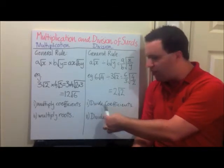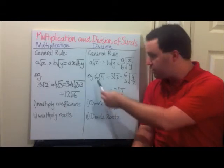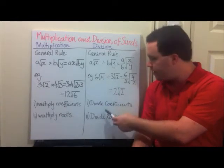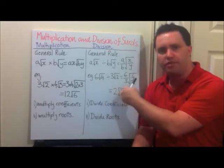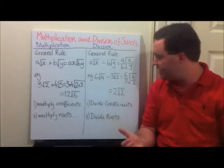The rules: divide our coefficients, so the numbers out the front get divided. Then we divide the roots - the numbers inside the square roots get divided against each other. You might need to simplify from here using the same process we've done before.